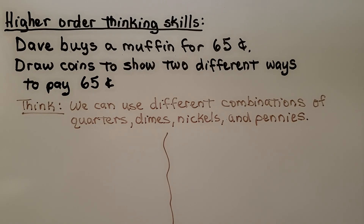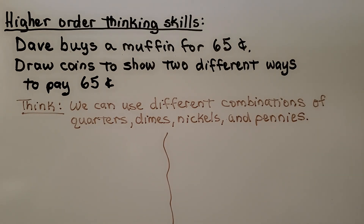Let's try some higher-order thinking skills. Dave buys a muffin for 65 cents. Draw coins to show two different ways to pay 65 cents. We can use different combinations of quarters, dimes, nickels, and pennies.